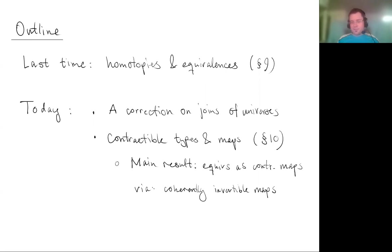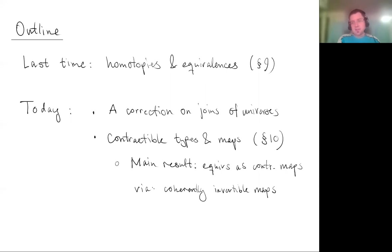Here's the menu for today. Last time we talked about section nine on homotopies and equivalences. Today we're going to deepen that by talking about contractible types and contractible maps, and we'll actually prove a non-trivial theorem that equivalences are the same as contractible maps. We'll use the notion of a coherently invertible map as a stepping stone in between.